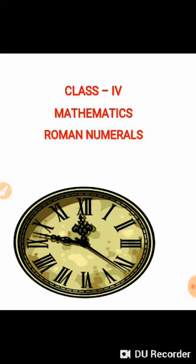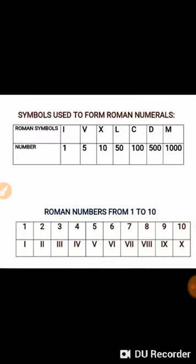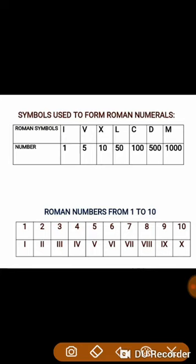Ancient Romans wrote numerals that did not use place value. They had seven basic symbols. Look at this chart — you can observe the basic symbols used to form Roman numerals. The basic symbols are I, V, X, L, C, D, M. I represents 1, V represents 5, X represents 10, L represents 50, C represents 100, D represents 500, and M represents 1000.